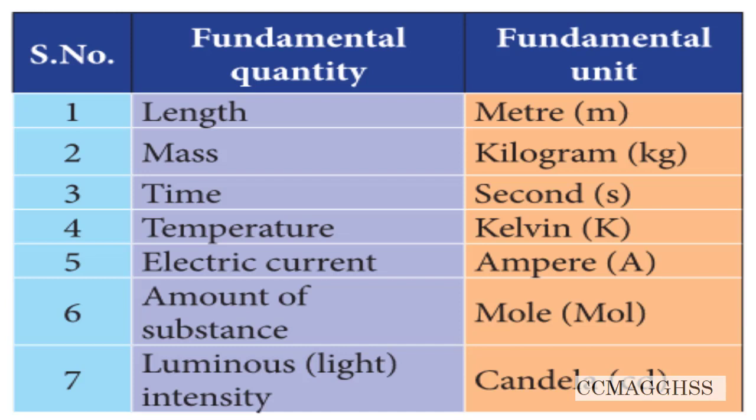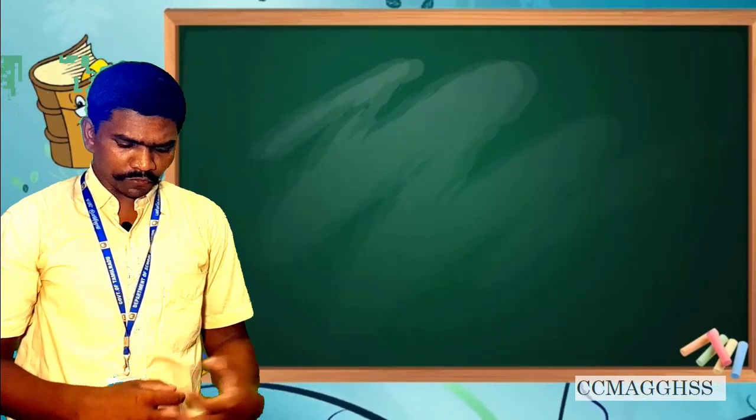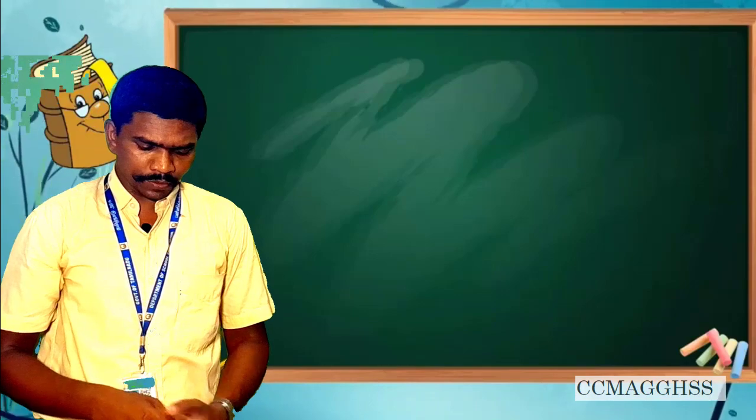Length is measured by meter. Mass is measured by kilogram. Time is measured by second. Temperature is measured by Kelvin. Electric current is measured by ampere. Amount of substance is measured by mole. Then last one is luminous intensity, measured by candela. Luminous intensity is nothing but light - how much light brightness we are getting is called luminous.